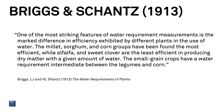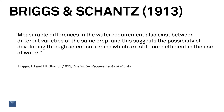Briggs and Schantz worked in the Midwest about that same time, and their research there was similar to Widtsoe's. One of the most striking features of water requirement measurements is the marked difference in efficiency exhibited by different plants in the use of water. The millet, sorghum, and corn groups have been found the most efficient, while alfalfa and sweet clover are the least efficient in producing dry matter with a given amount of water. The small grain crops have water requirements intermediate between the legumes and the corn. They also made the observation that measurable differences in the water requirements exist between different varieties of the same crop, suggesting the possibility of developing through selection strains that are still more efficient in the use of water — though that's still a hope, and not an area where we've seen a lot of progress over the last century.